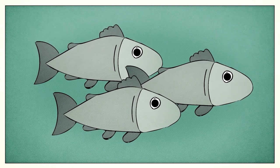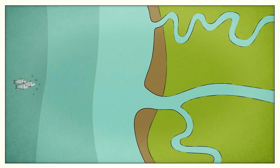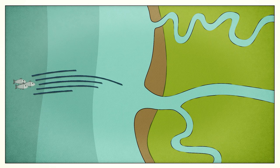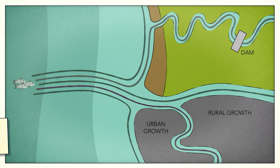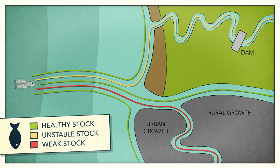Adult salmon return to the rivers and tributaries of their birth to spawn the next generation. Each of these unique populations is affected by the quality of the habitat, resulting in healthy, unstable, or weak stocks.